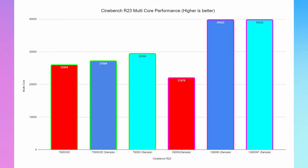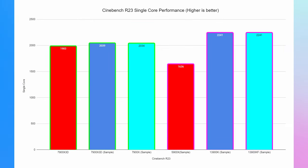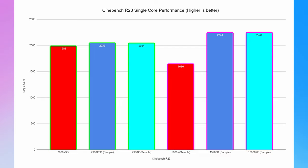In Cinebench multi-core I scored 25,904, versus CPU Monkey's sample of 27,084, while the standard 7900X scores higher at 29,306 — reflecting the 7900X's better multi-core performance. The Intel 13900K and KF both tower above these. In single-core, the 7900X 3D scored 1,983 on my tests; the CPU Monkey sample is 2,039 and the 7900X hits 2,034. However, the 13900K and KF still lead single-core at 2,241.